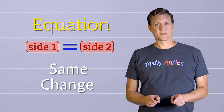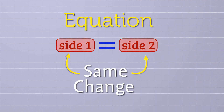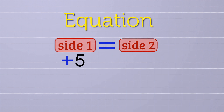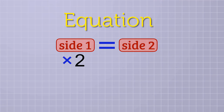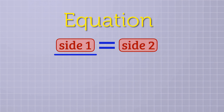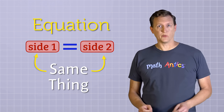That's so important: whenever we do something to an equation, we have to do the same thing to both sides. If we want to add something to one side, we have to add that same thing to the other side. If we want to subtract something from one side, we have to subtract that same thing from the other side. The same goes for multiplication and division — multiply or divide one side by a number, and you must do the same to the other side. As long as you always do the same thing to both sides, the equation will stay in balance and remain true.